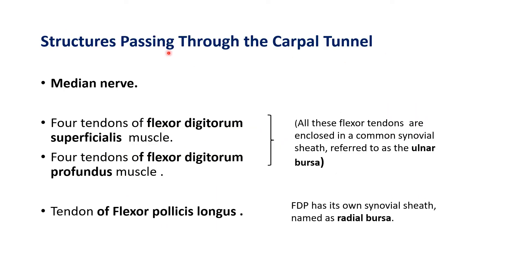Let us look at the structures passing through the carpal tunnel. All the tendons of the long flexors of fingers and thumb along with one nerve — the median nerve — pass through this tunnel. The structures are: the median nerve, four tendons of flexor digitorum superficialis muscle, and four tendons of flexor digitorum profundus muscle. All these tendons are enclosed in a common synovial sheath known as ulnar bursa. Then we have the tendon of flexor pollicis longus for the thumb, which has its own synovial sheath known as radial bursa.